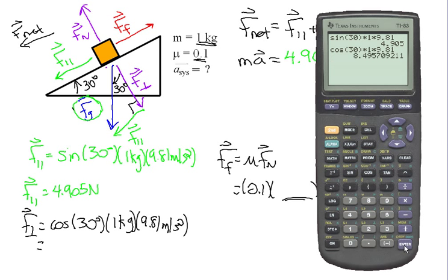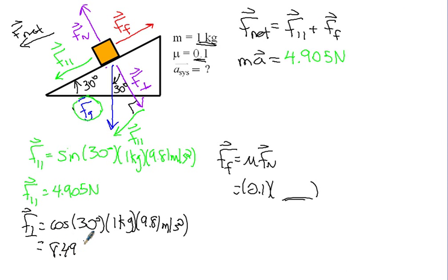I'm just going to change this around, and we're going to do cosine. So 8.495, let's just call it 8.496 Newtons for our force perpendicular. My force of friction is 0.8496 Newtons, roughly. And I can put that up into my substitution now.